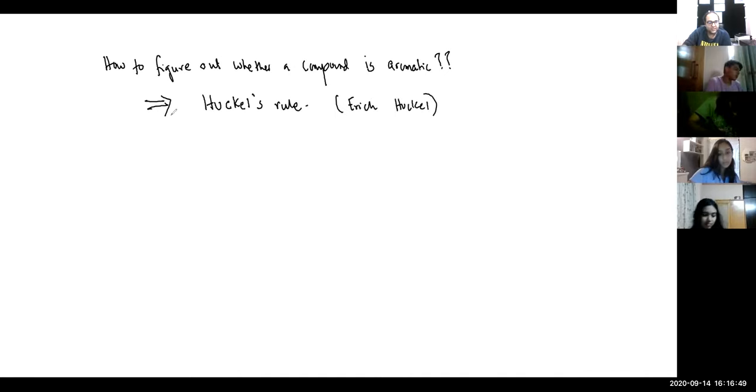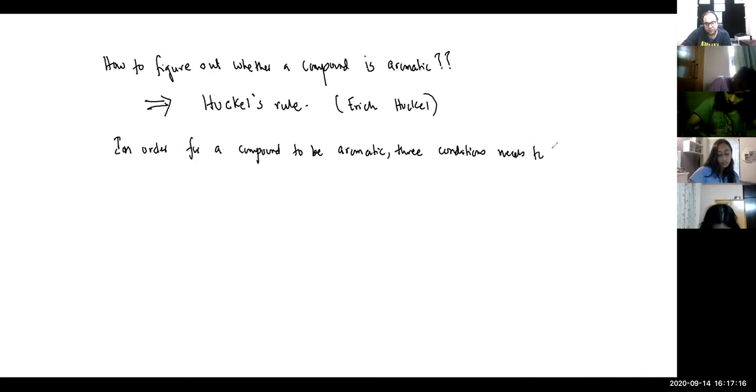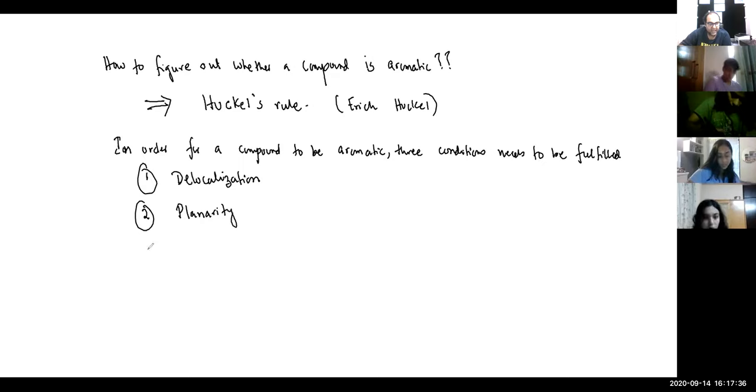But it's a very very important thing - Huckel's rule, name of the scientist Erich Huckel. So he said that in order for a compound to be called aromatic, three conditions needs to be fulfilled: number one delocalization, number two planarity, and number three 4n plus 2 pi electrons.